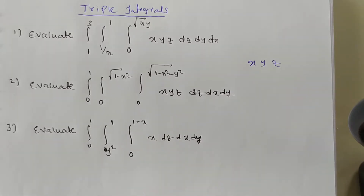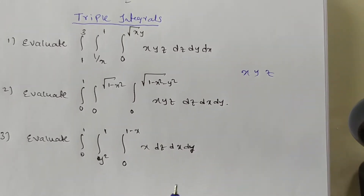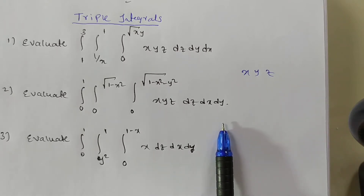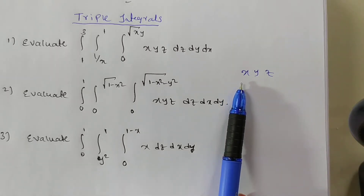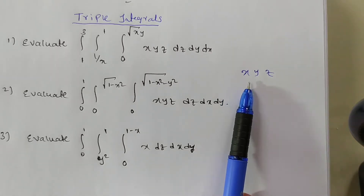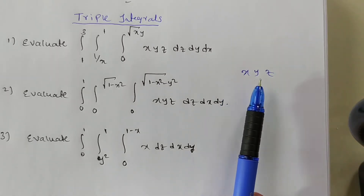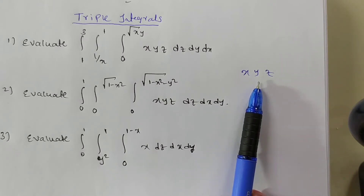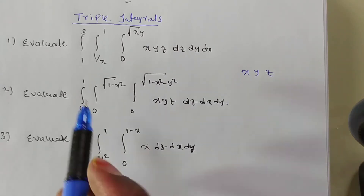So first, what we have to do: we need to find the x limit, y limit, z limit. If a variable's limit is dependent on more than one variable, then we have to integrate with respect to that variable first. If the z limit is dependent on two variables, integrate with respect to z first. If the y limit is dependent on two variables, differentiate — integrate — with respect to y first. That is the important rule.